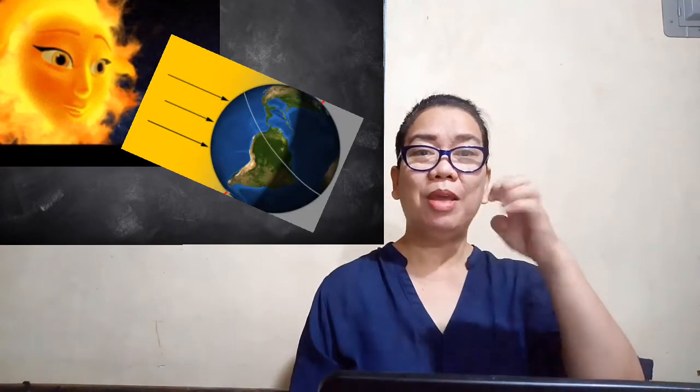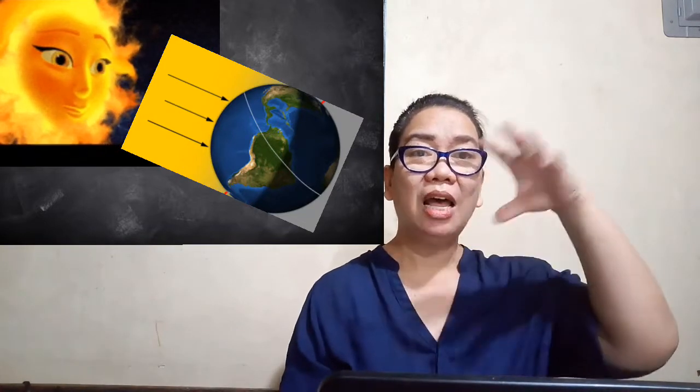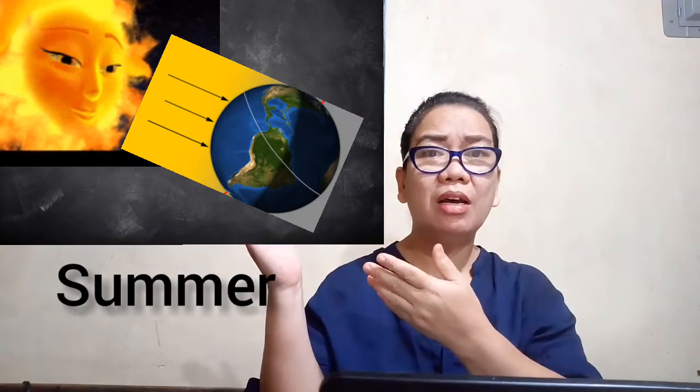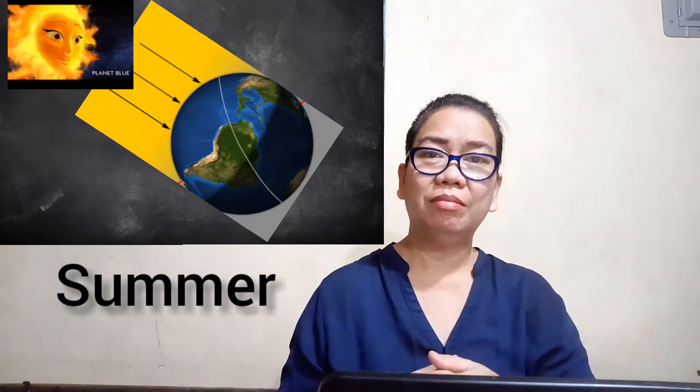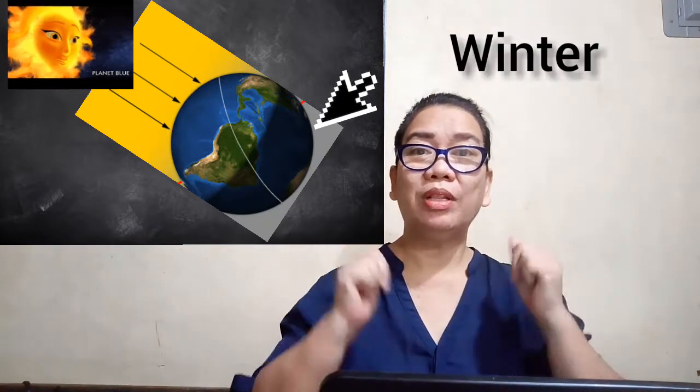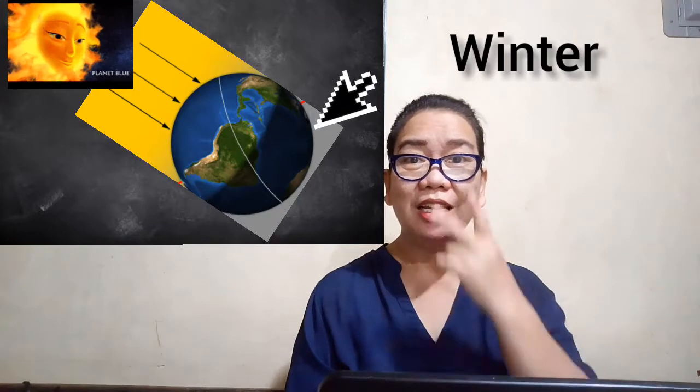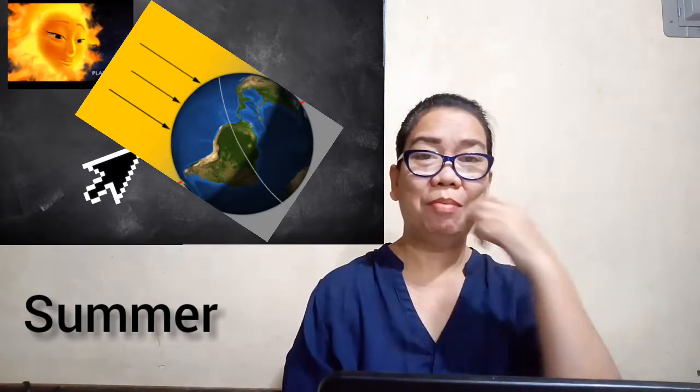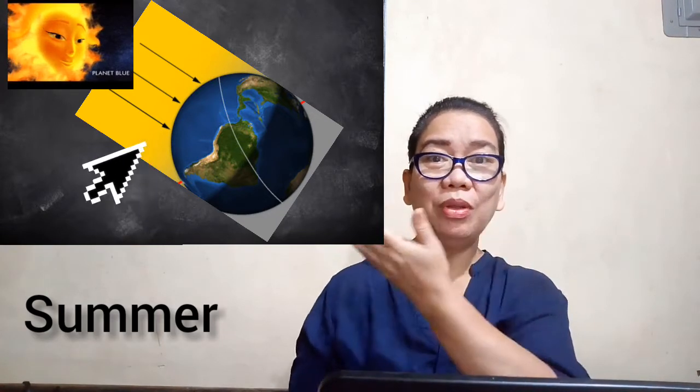The hemisphere leaning towards the Sun experiences summer. Look here. And the other hemisphere experiences winter. The hemisphere facing the Sun experiences summer. This is how it works.